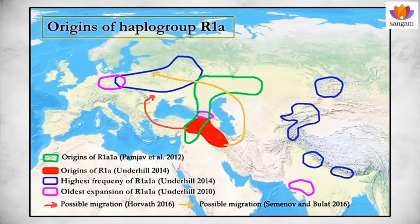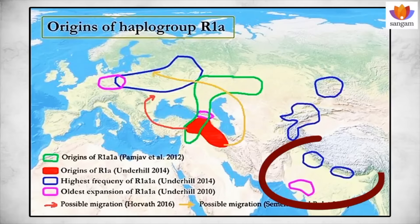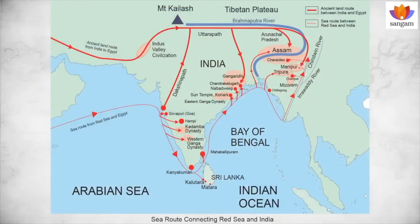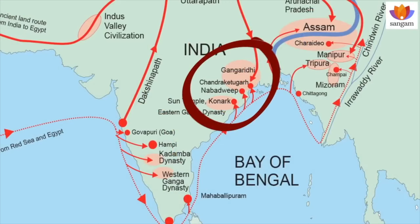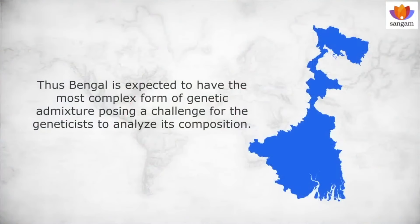It is much easier to detect a pocket of early genetic fraternities in a remote region where the population remained relatively undisturbed, like in the Himalayan region and Gujarat. On the other hand, it is extremely difficult to locate a pocket of early R1-alpha in Bengal, as this region received a number of reverse migration fraternities over millennia till a recent period from different directions. Thus, Bengal is expected to have the most complex form of genetic admixture, posing a challenge for the geneticist to analyze its composition.